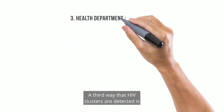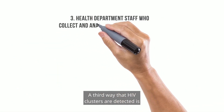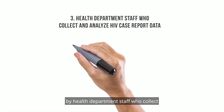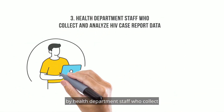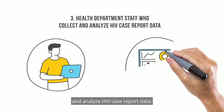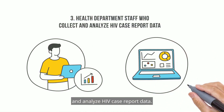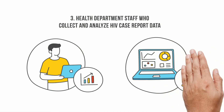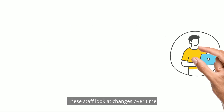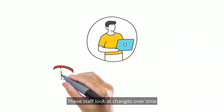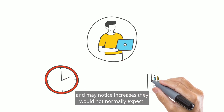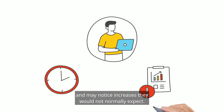A third way that HIV clusters are detected is by health department staff who collect and analyze HIV case report data. These staff look at changes over time and may notice increases they would not normally expect.